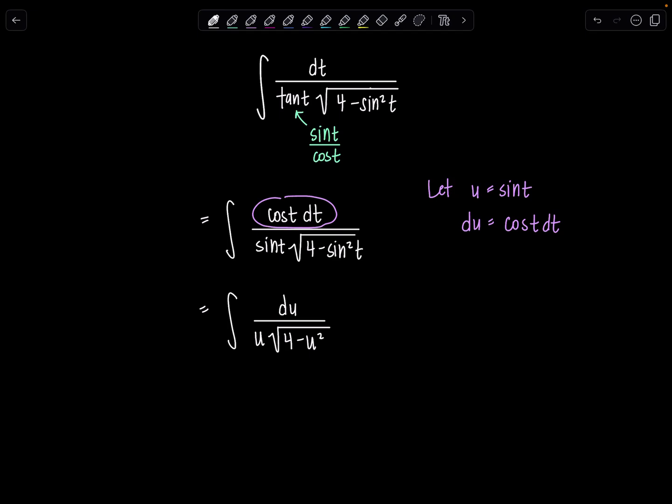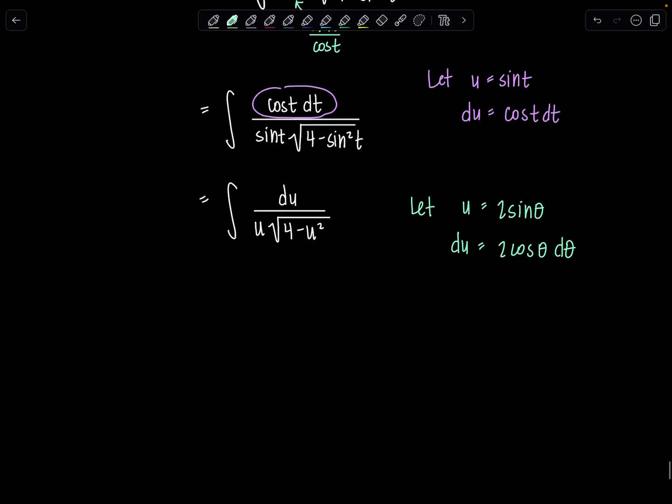So when we have the constant first minus the variable quantity squared, that's when we come in with good old sine theta substitution. So we're going to let u equal, a is 2 because we have 4, right? So it's a squared minus u squared. So this is going to be 2 sine theta. And then du will be 2 cosine theta d theta. All right, very good.